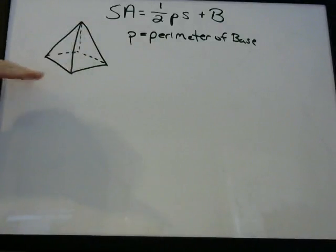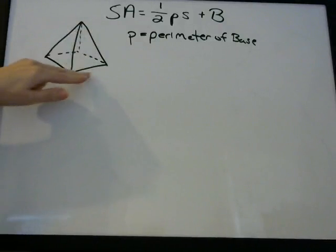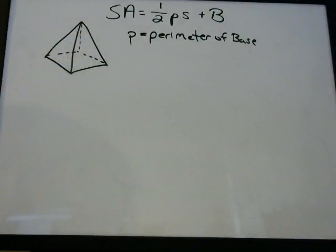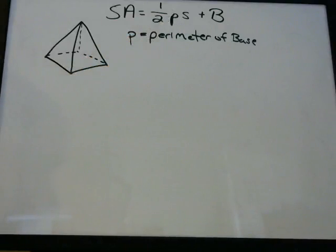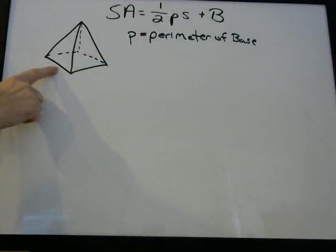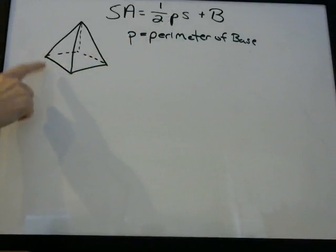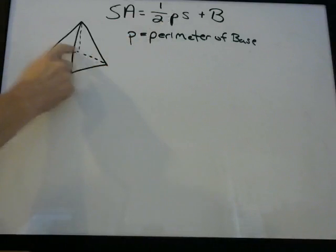This formula means that all the sides and the base are always going to be the same shape — in this case it's going to be a square. In order to know what P is, you need to know how to find the perimeter of a square or a rectangle. Essentially, perimeter means the distance around something.